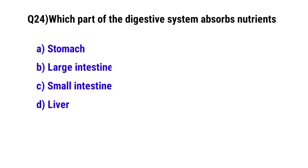Question No. 24: Which part of the digestive system absorbs nutrients? The correct option is C: Small intestine.